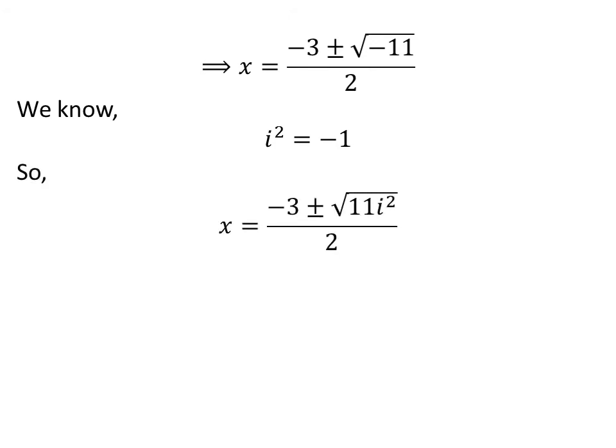We know i² = -1. So, the application of the above property gives us x = (-3 ± √(11i²)) / 2.